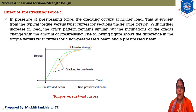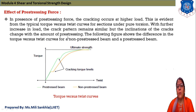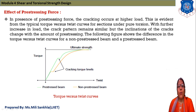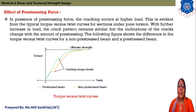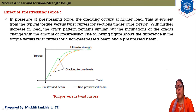Regarding the effect of prestressing force — the presence of prestressing force causes cracking to occur at a higher load. This is evident from the typical torque versus twist curve for a section under pure torsion. With further increase in load, the crack pattern remains similar but the inclination of cracks changes with the amount of prestressing force. The following figures show the difference in torque versus twist curves for non-prestressed and prestressed beams, with torque on the vertical axis and twist on the horizontal axis.